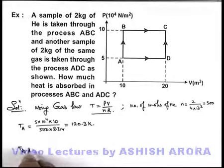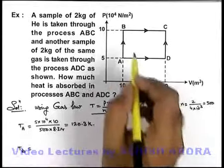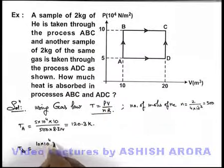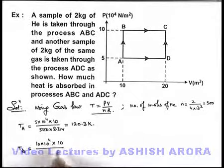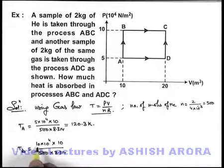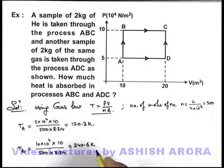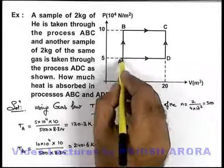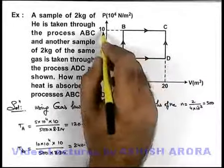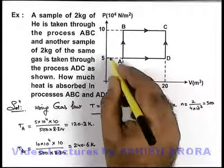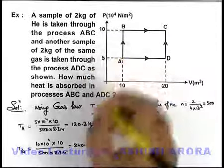Similarly in state B, pressure is 10 × 10⁴, volume is the same 10 m³, divided by 500 × 8.314. Only the pressure parameter is doubled, so the total temperature at point B will also be doubled: 240.6 Kelvin. You can also directly use that volume is constant from state A to B and pressure is doubled, so by ideal gas law P₁/T₁ = P₂/T₂, doubling the pressure doubles the temperature.